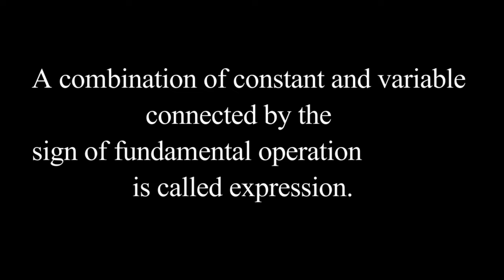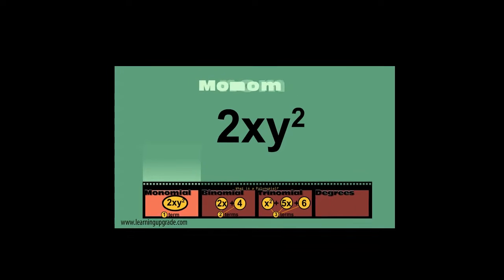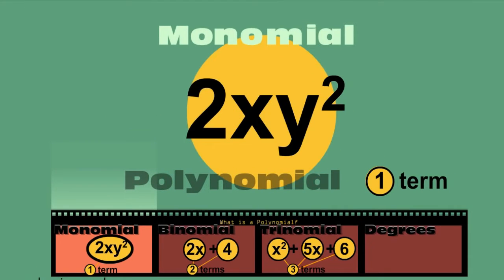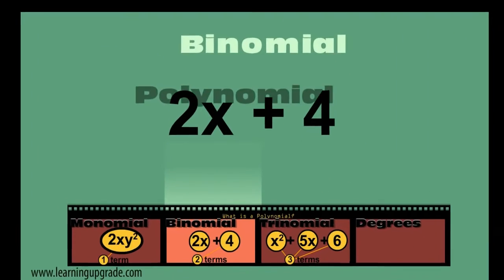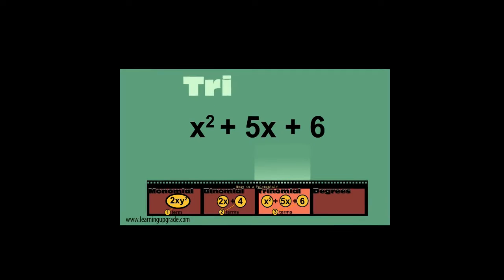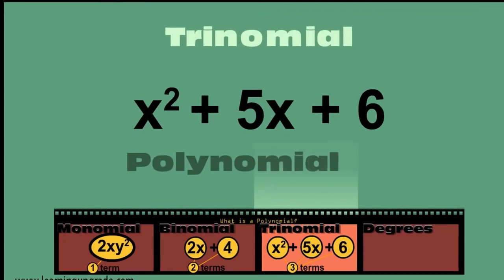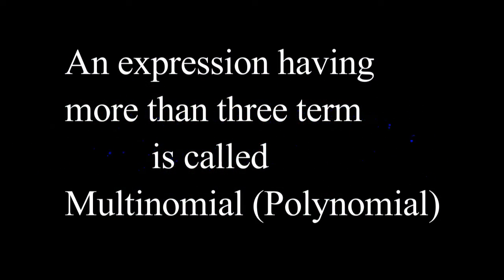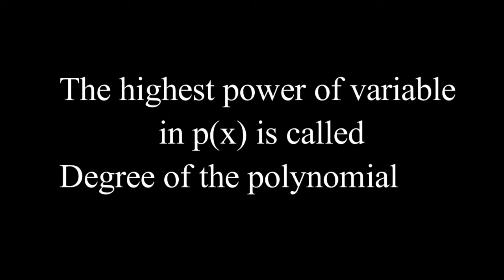An expression having only one term is called monomial. An expression having only two terms is called binomial. An expression having only three terms is called trinomial. An expression having more than three terms is called multinomial.